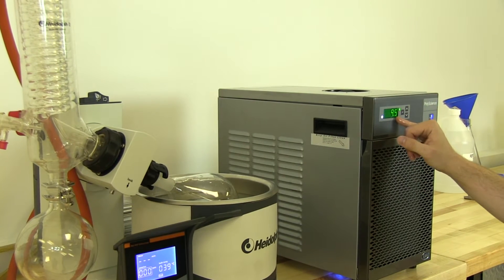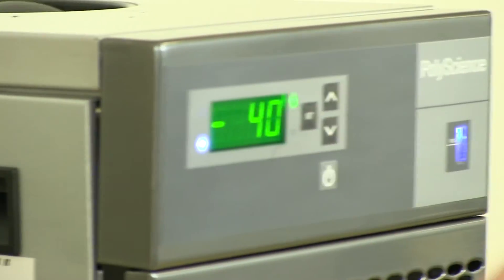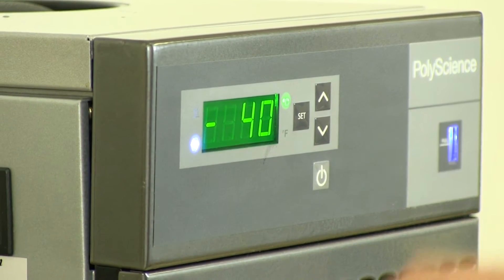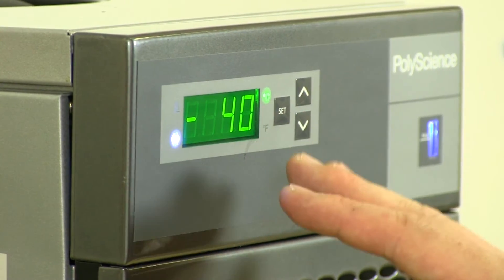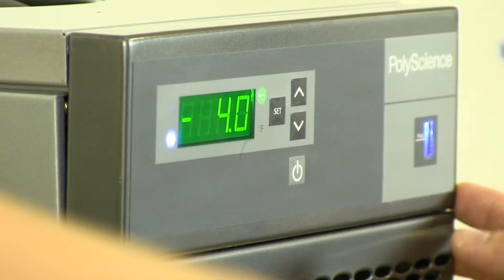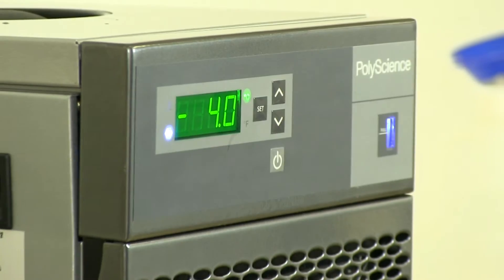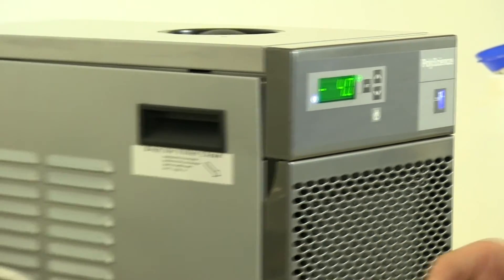Allow the unit to get down to temperature. It's at about 9.5°C right now, but we have it set for minus 4. Minus 4, minus 5, that's about the optimal distillation temperature as far as the condensation will go inside the condenser coil here and this whole distillation process.